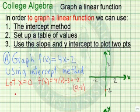Now let's consider f of x equal to 0. So we have 0 equals 4x minus 2. If we add 2 to both sides, we have 2 equals 4x.